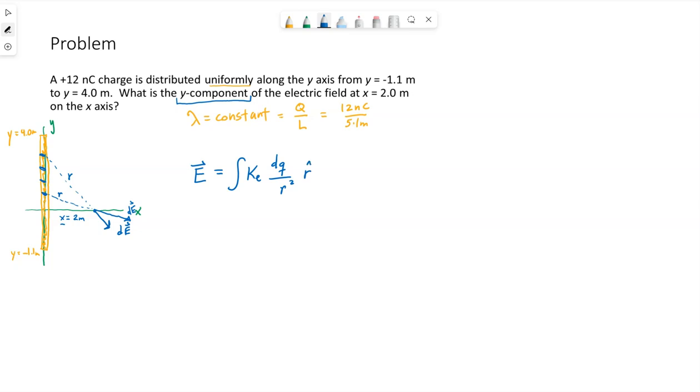So we're treating the rod as a whole bunch of point charges, dQ, divided by r squared, where r is the straight line distance between one point charge and where we're trying to find the field. R is changing here. And then multiply by r-hat, meaning the direction. So all of these, we essentially need to find dQ, r, and r-hat. And really, we only need the y-component for this problem. That's all it is asking for. The electric field will definitely have both x and y components, but this particular problem is asking us only for the y.